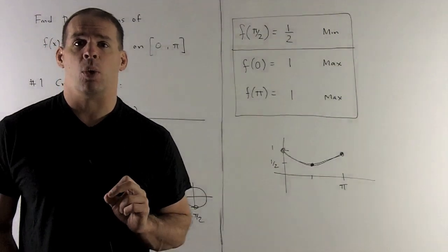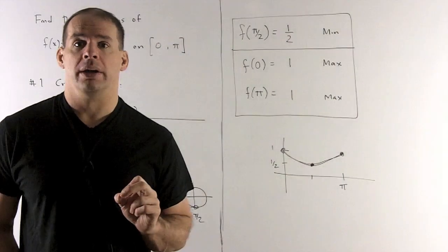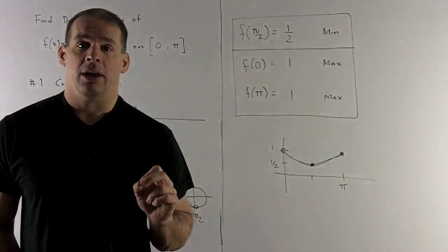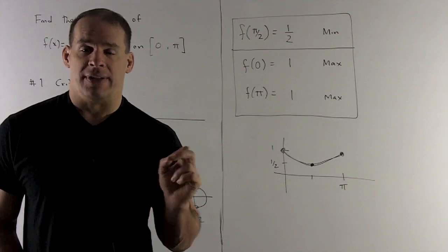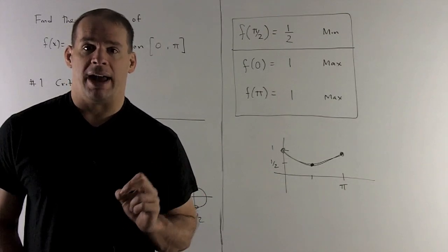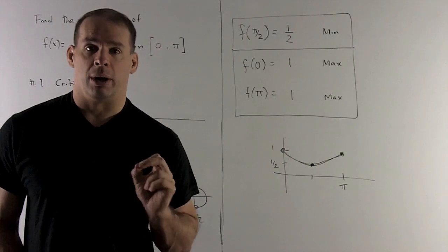At π/2, I get 1/2, and on the endpoints, we get 1 and 1. So we note, we're going to hit our max and mins on every point under consideration. At the endpoints, we'll hit the maximum, and then at π/2, our critical point, we hit our minimum.